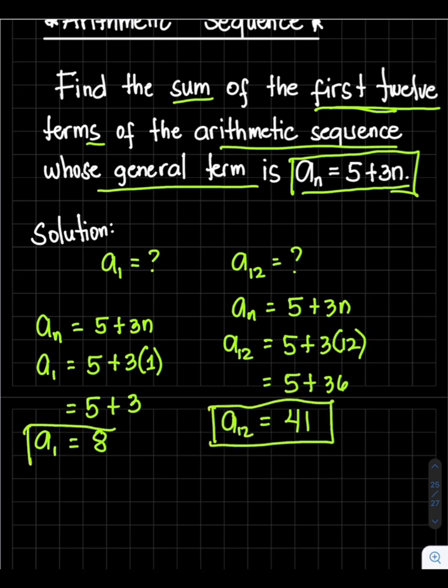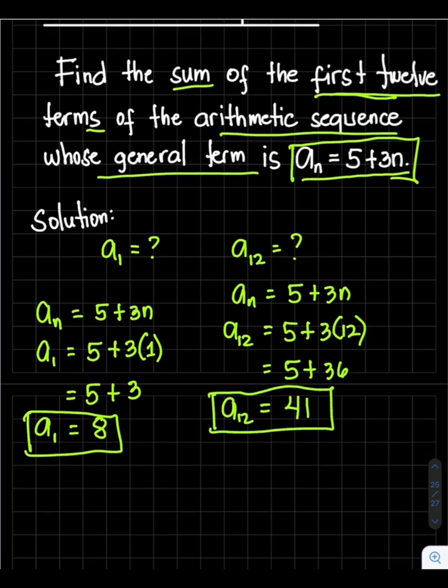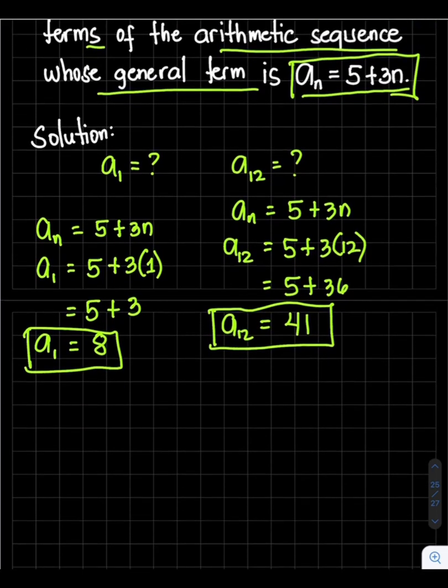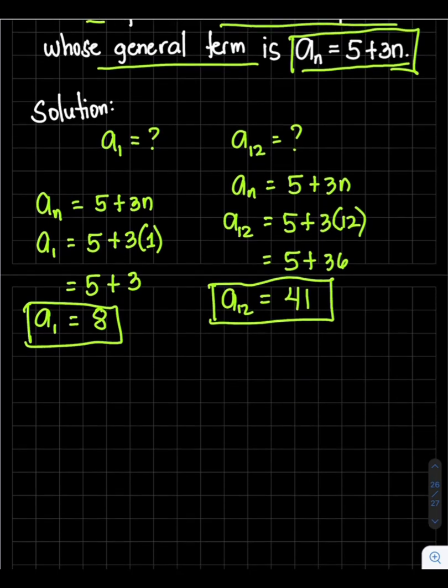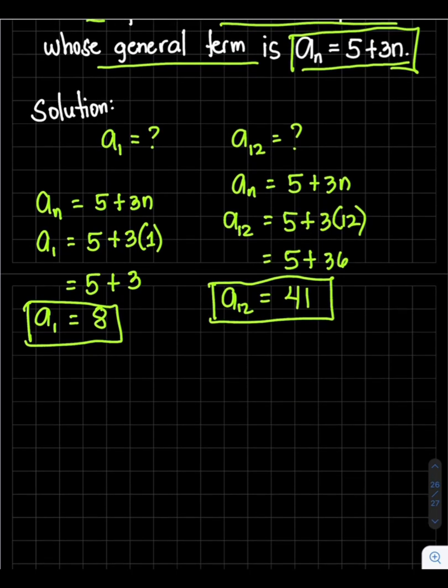Remember, the first term is 8 and the 12th term is 41. So to find the sum, the formula is S_n = (n/2)(a_1 + a_n), where a_n is the last term.